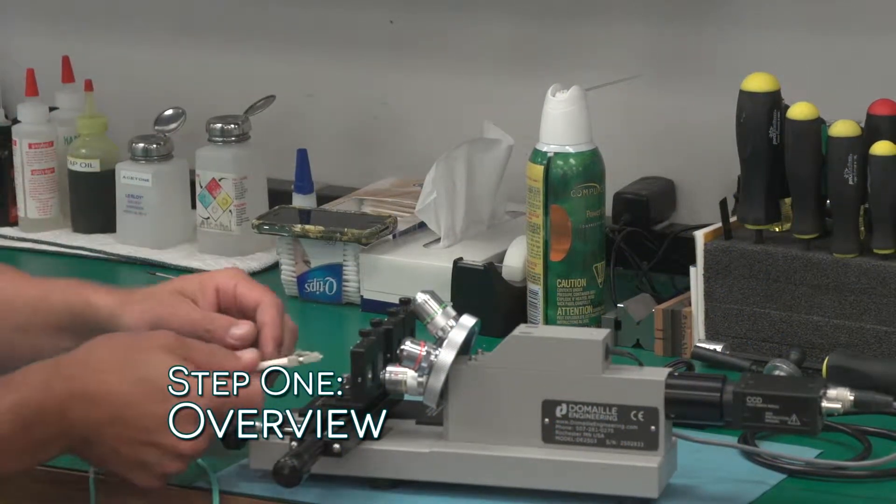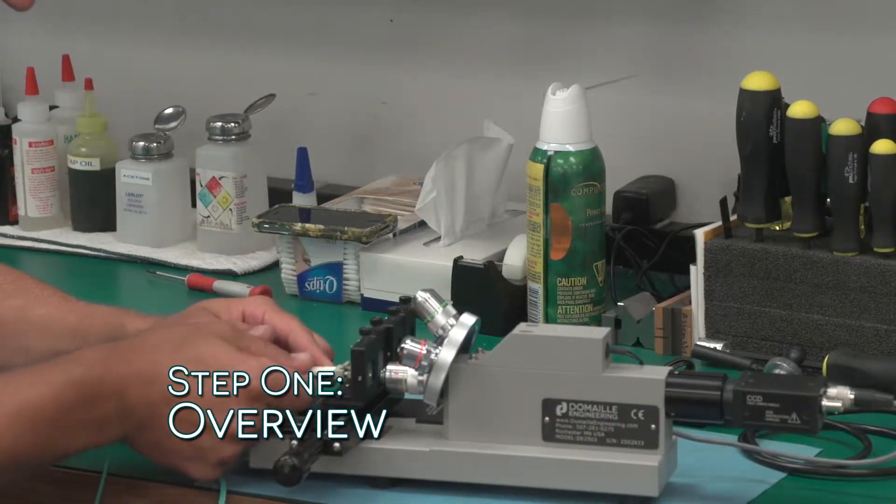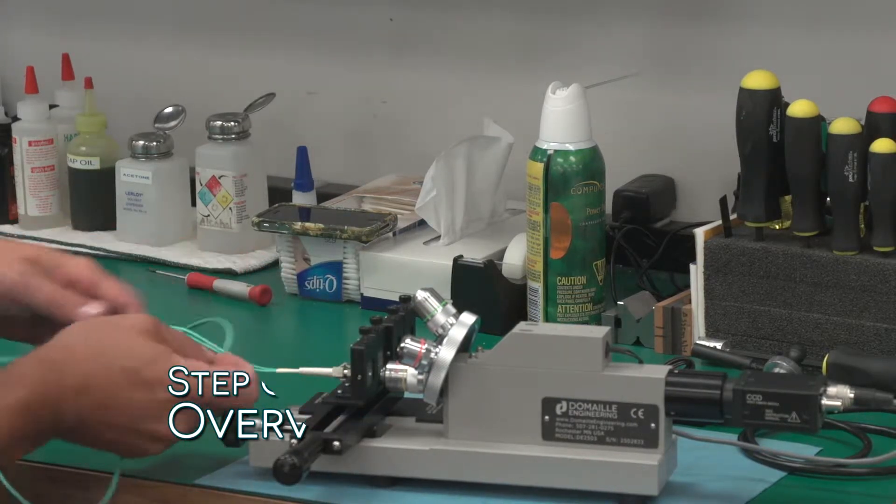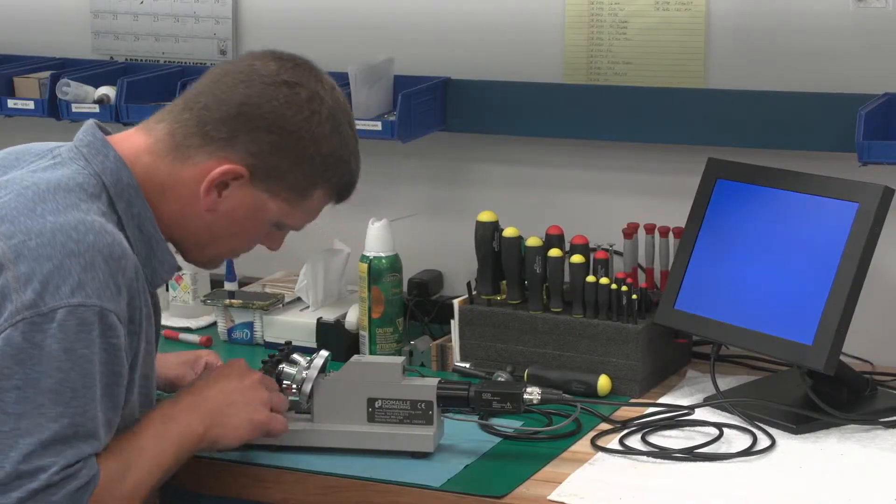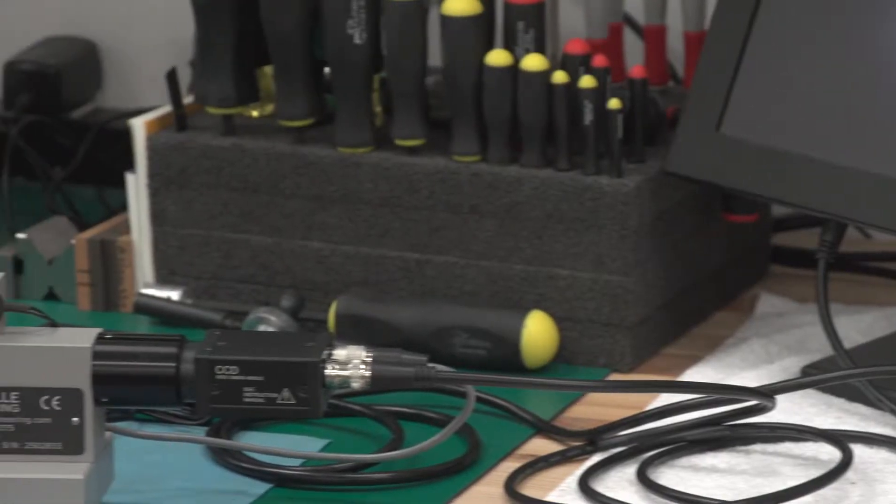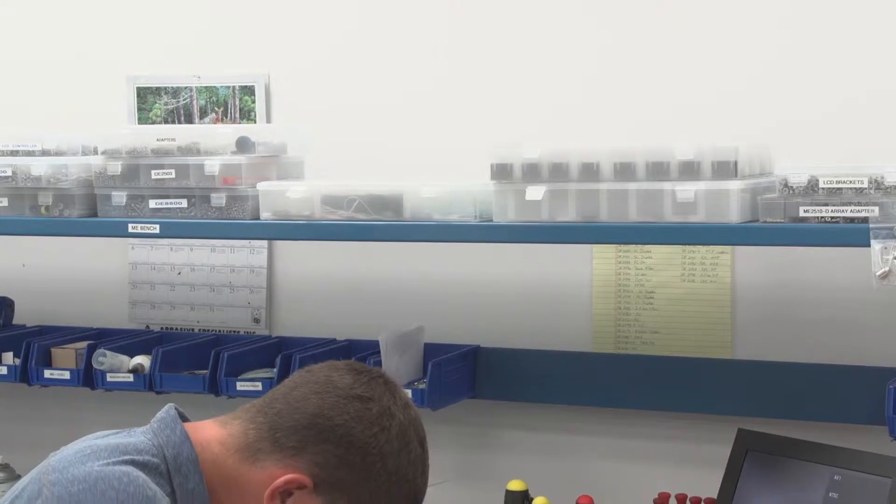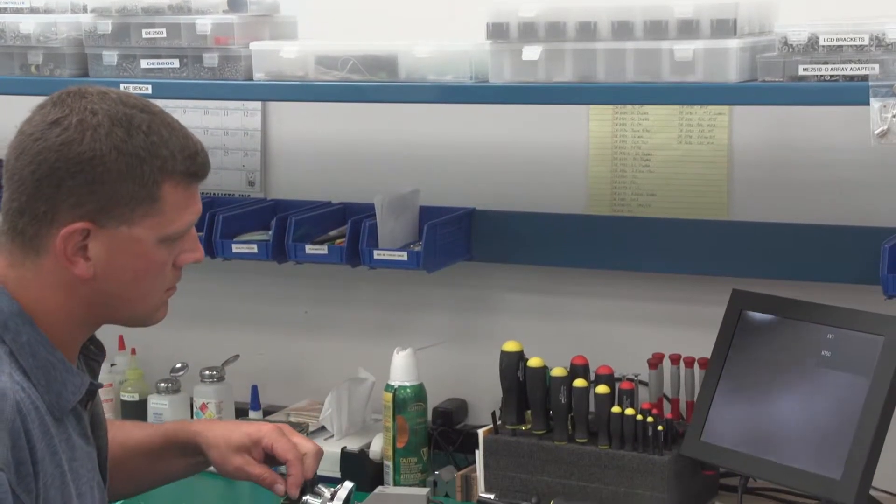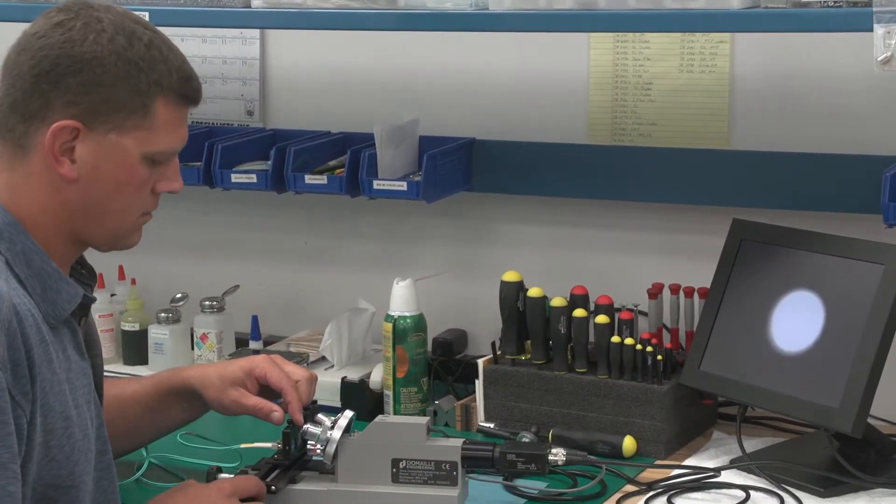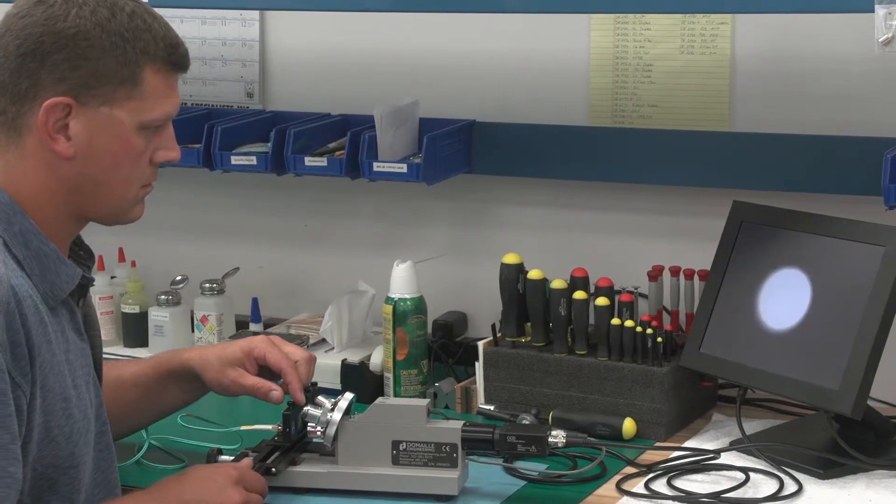Step 1: Overview. The DE2503 Video Microscope is designed for visual end-phase inspection of fiber-optic connectors in a production environment. The DE2503, our most popular model, is equipped with a four-position linear slide that can be loaded with four different connector adapters.